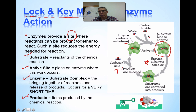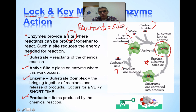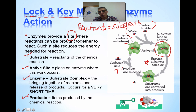Oftentimes people get confused about what a substrate is. The substrate is simply the same thing as the reactants — reactants equals the substrate. The substrates are the reactants of the chemical reaction, those things on the left-hand side. The active site is where they're going to be brought together. The enzyme-substrate complex is when you have both of them together as one. And the products, of course, are whatever is going to be produced by that reaction.